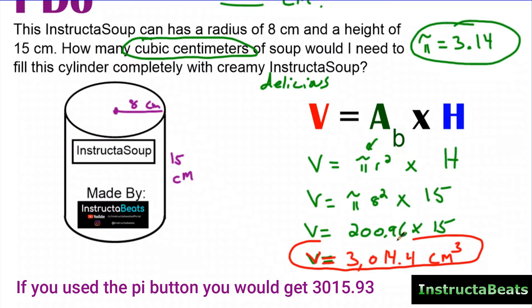So it would take 3014.4 cubic centimeters of delicious, creamy InstructaSoup to completely fill this cylinder. Now, if you have a pi button, it might have taken that decimal place out a few more places, and that's totally okay. I just multiplied using 3.14 as pi.